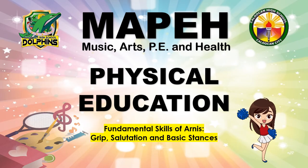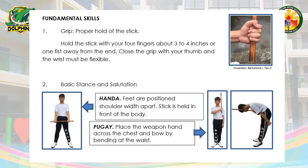In PE or Physical Education, we are going to talk about the fundamental skills of Arnis: grip, salutation, and basic stance. Number 1 is Grip — the proper hold of the stick. Hold the stick with your 4 fingers about 3 to 4 inches or 1 fist away from the end, as shown in the picture. Close the grip with your thumb and the wrist must be flexible.